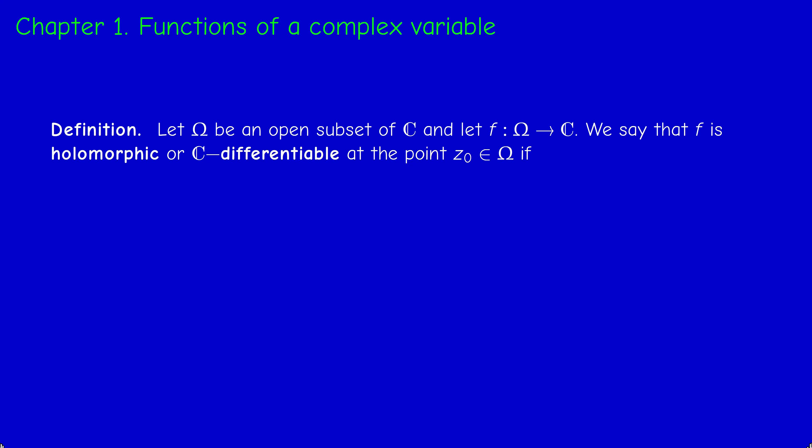Another name for holomorphic is C-differentiable. For a function to be holomorphic at a point, it simply means that Newton's ratio tends to some limit as the denominator tends to zero. It's the same notion as for real variables, but there is a big difference: we are working in C, which has a multiplication — it's a field — not in R, which is one-dimensional. This condition is therefore more restrictive than simple differentiability of a function of a real variable, even though the definition looks the same.